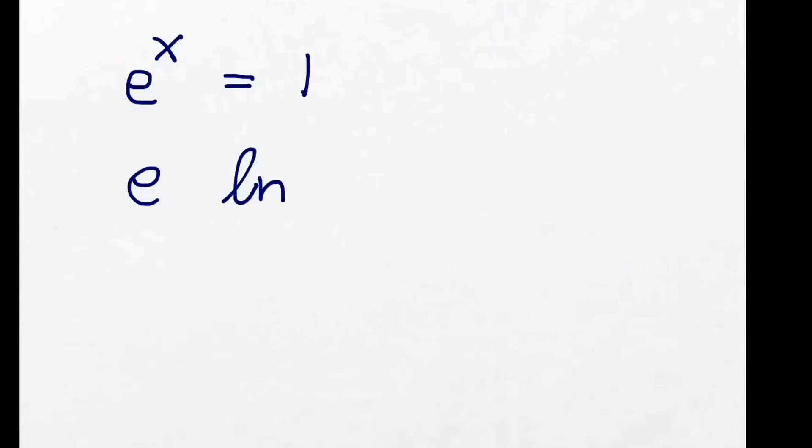Now we have e to the power of x equals 1. That's an interesting one because now we don't have 10 to the power of x — we've got e, this 2.718-something. What we need to remember is that e and ln are the inverse mathematical operations, just as 10 and log were before.